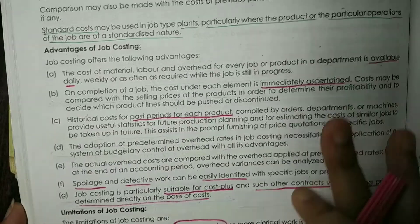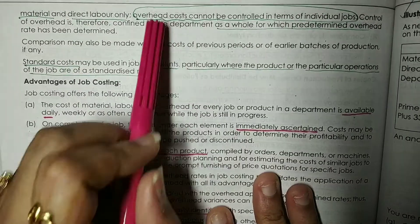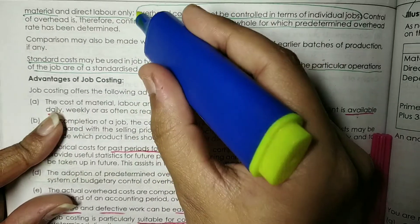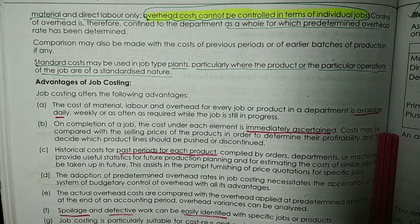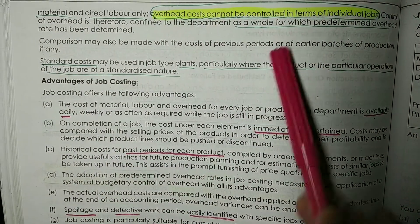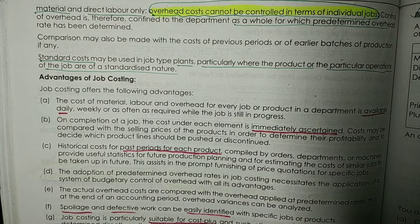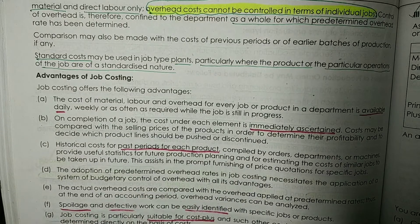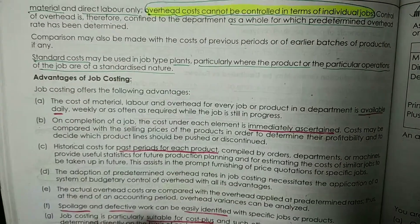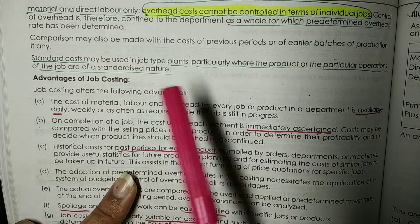Looking at what the book says: for direct material and direct labor, a lot of cost control is available. However, overhead cost cannot be controlled in terms of individual jobs — this is an important point to highlight. The control of overhead is confined to the department as a whole; we cannot control it individually for each particular job, unit, or product. Comparison may also be made with the cost of previous periods.